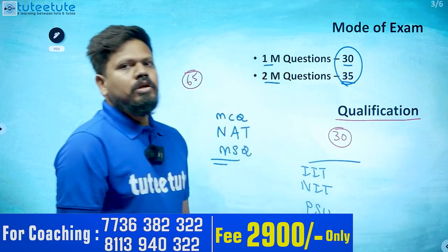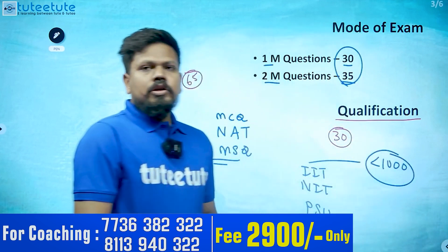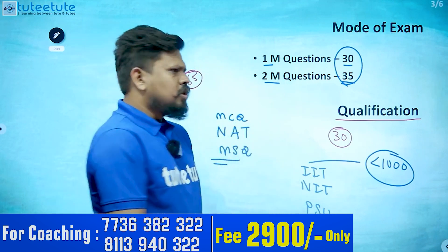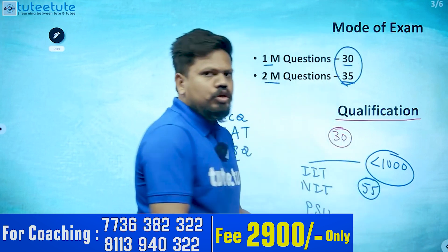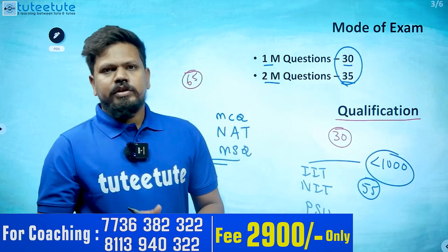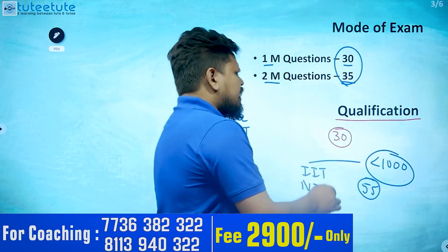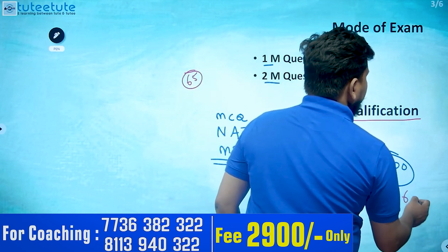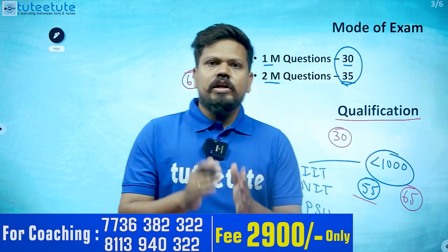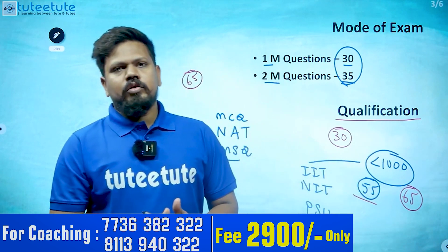To get into IITs, NITs, or PSUs, you need a rank below 1000. How many marks that requires depends on the question paper. For example, in ECE in 2022, 55 marks was enough for PSU interview selection. Some years it is 55 to 60 marks, some years it goes up to 65. Aim for 55 to 65 marks for a rank below 1000; targeting 70 marks is even better.